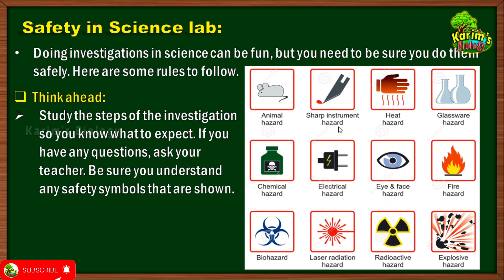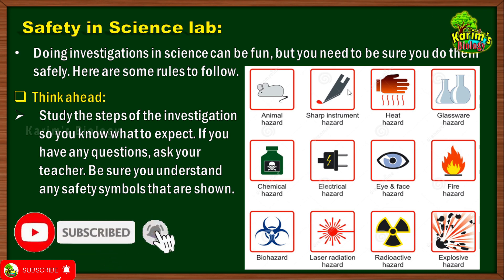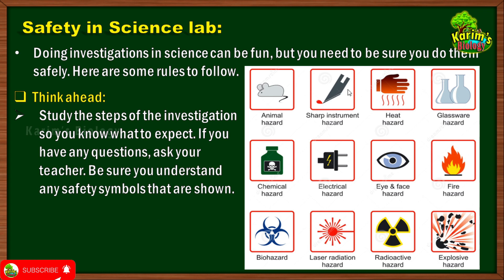The symbol for sharp instrument hazard means you may use instruments such as blades or glass rods in the science lab, and there is a chance you may get injured. So this symbol will be printed on objects you must be careful with. Heat hazard — if any apparatus or chemical can cause hazard in the form of heat, this is the symbol to look for. Glassware hazard means glass items may be broken and cause injuries.